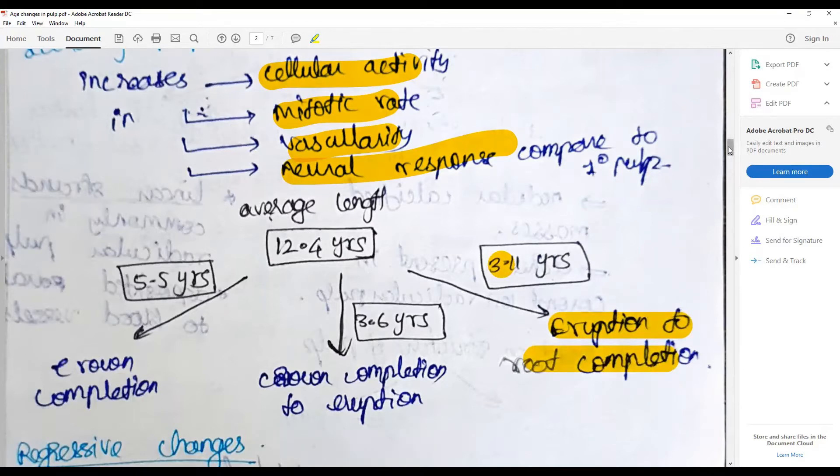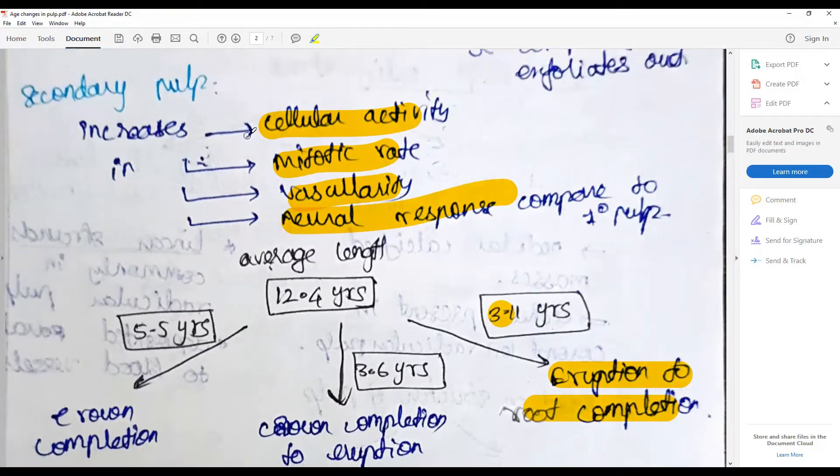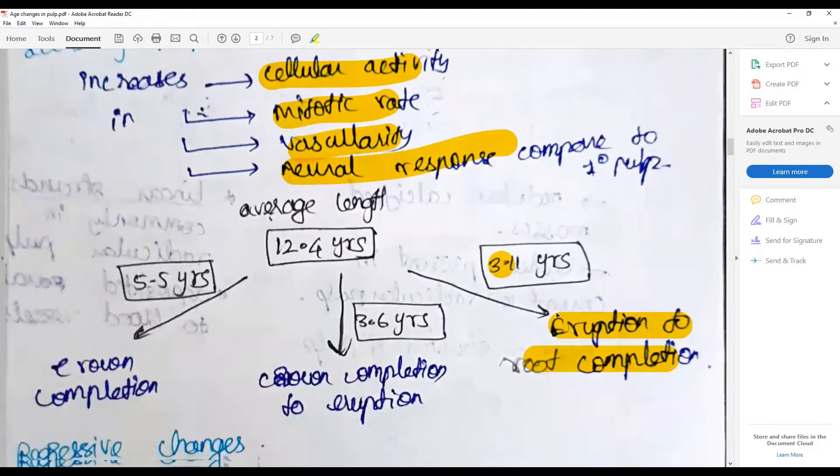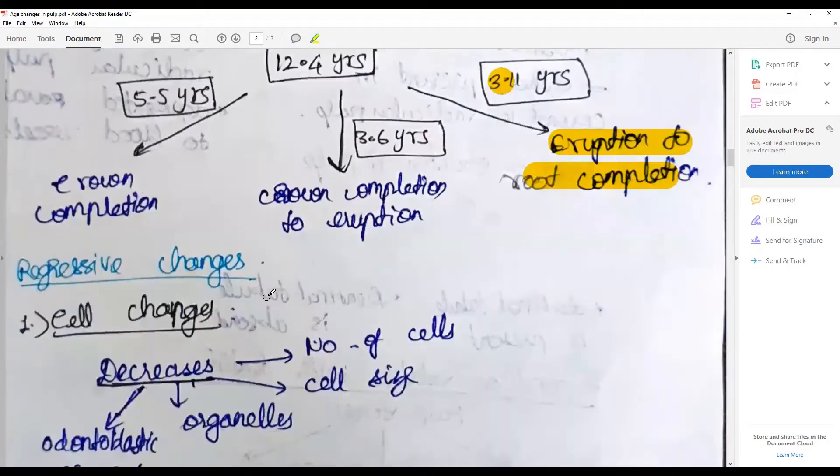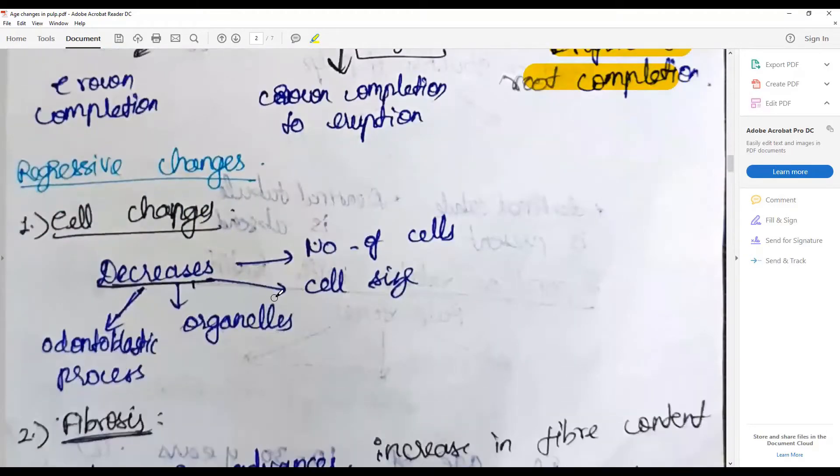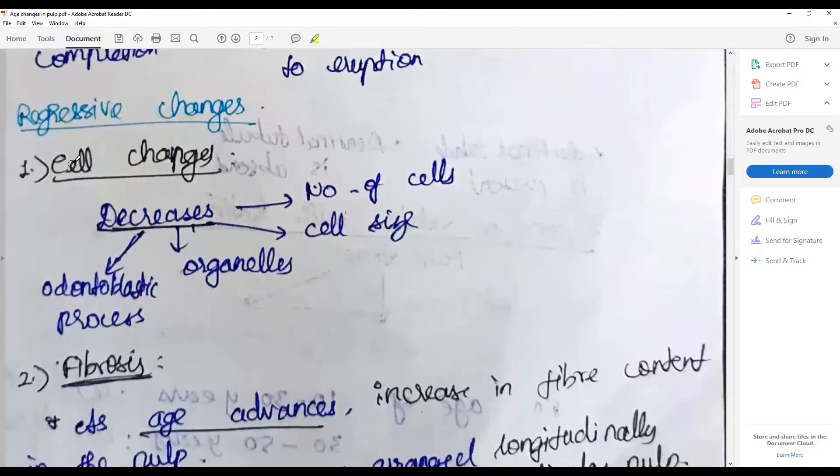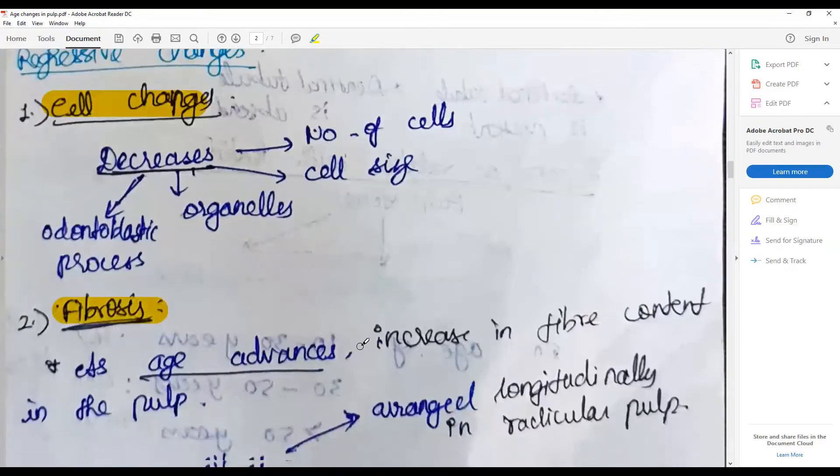About 3.6 years is crown completion to root eruption, and 3.11 years is eruption to root completion. It survives into adult stage. The regressive changes could be classified broadly into cellular changes, fibrosis,